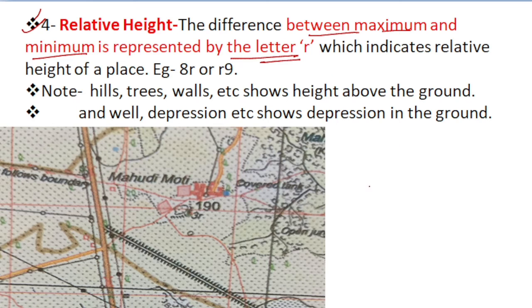It is always taken from the ground level, not from the mean sea level. It is represented by a small letter r followed by a number.